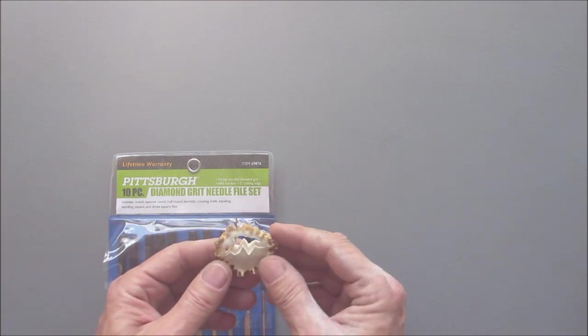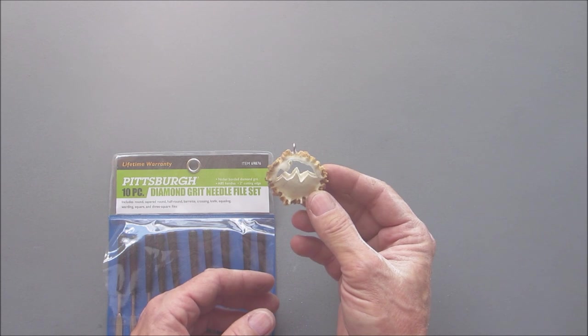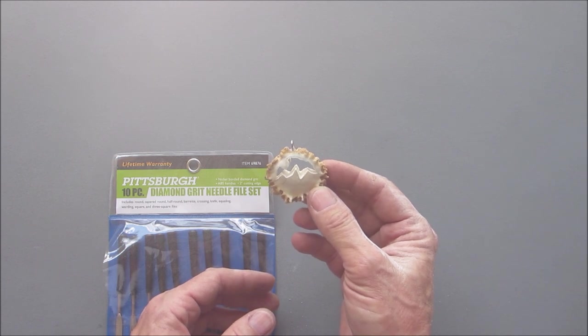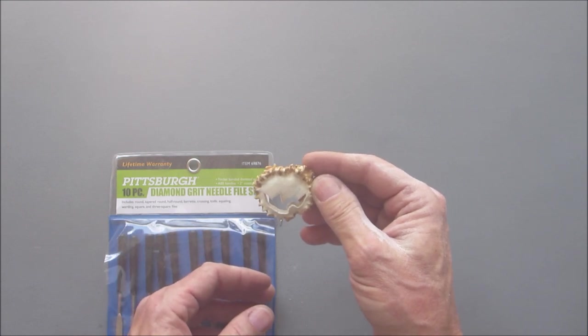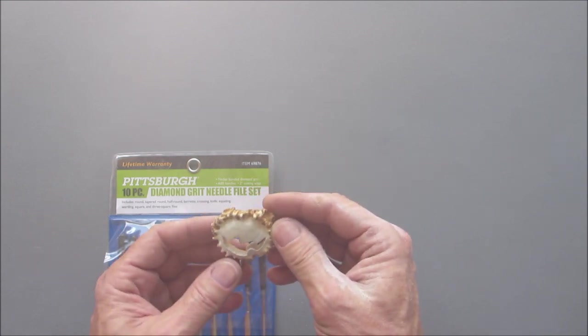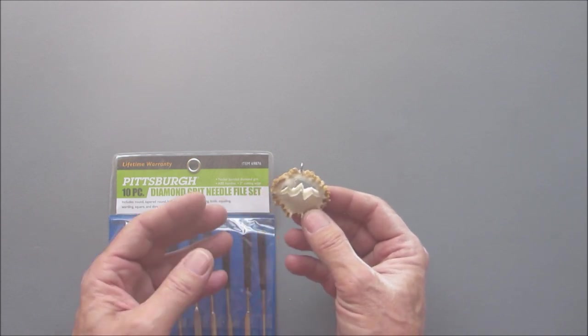All right, so I got the initial shape cut out. I'm not sure if it looks like mountains or if it looks like a crazy pumpkin. That's what I should have done. I should have made a carved pumpkin.